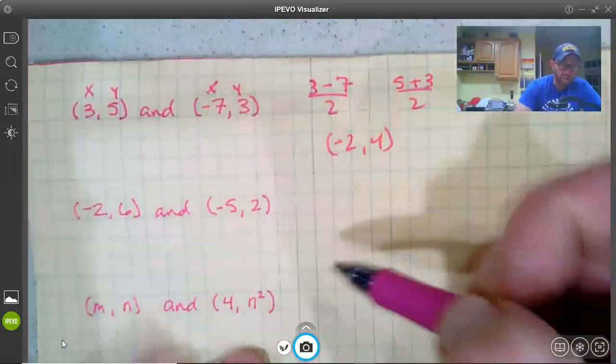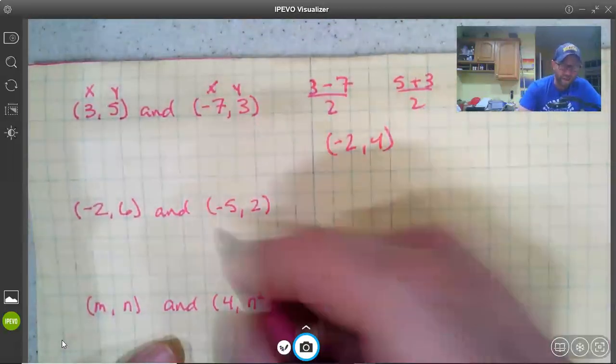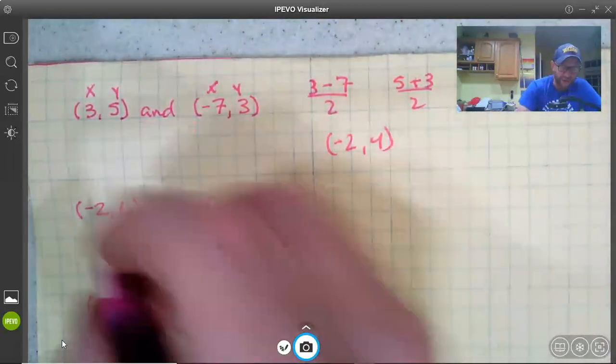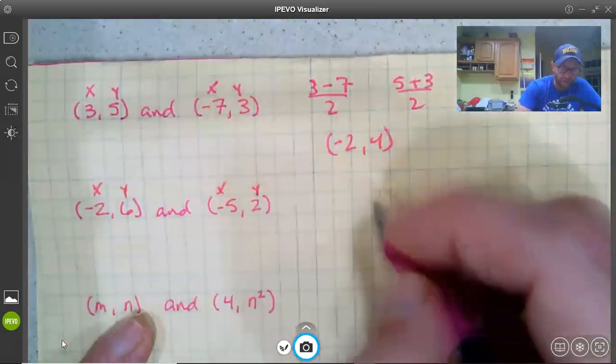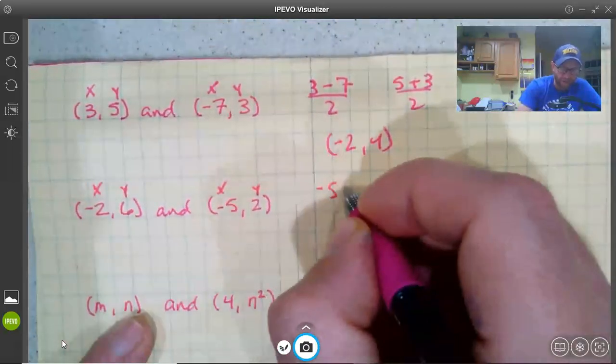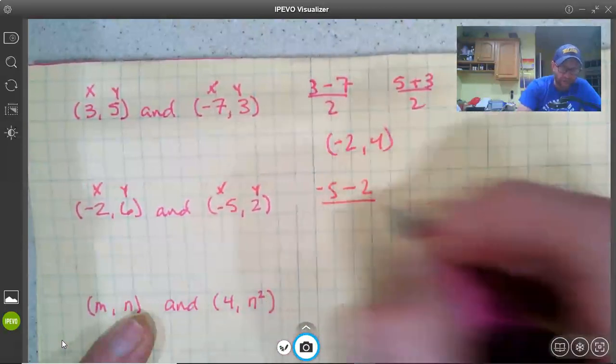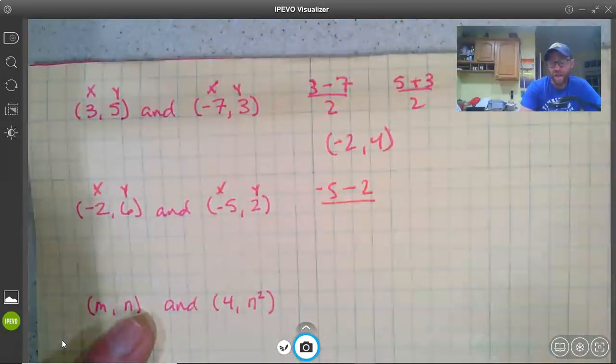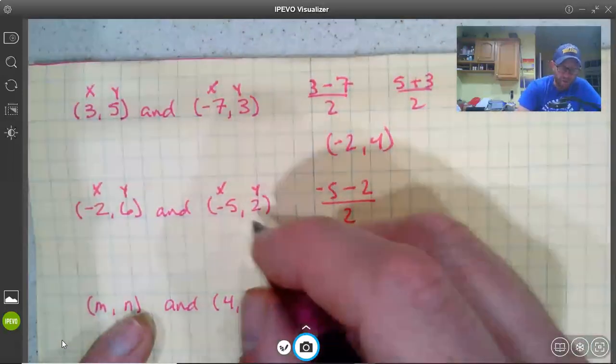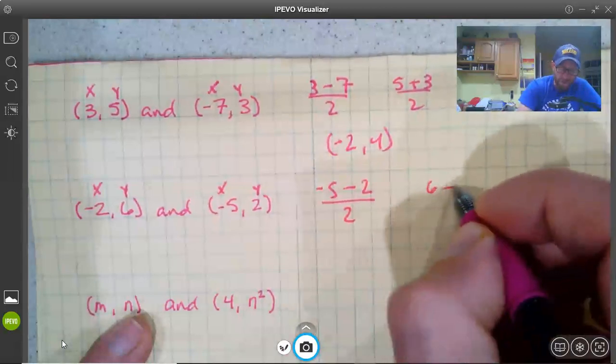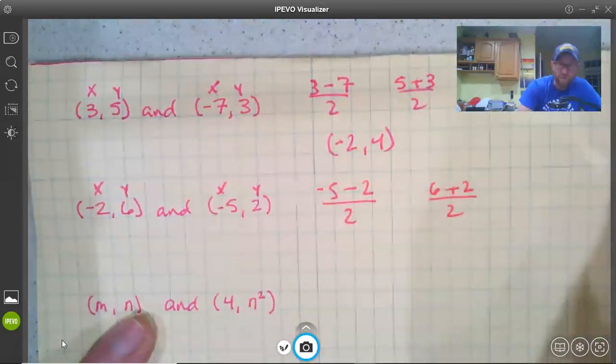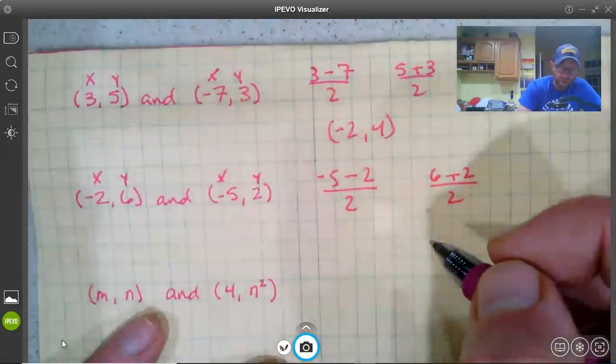Here's another one, negative 2 and negative 5. So I'm going to add together my x-coordinates and my y-coordinates. Negative 5 and negative 2, so I add them together. Negative 5 minus 2, which again, minus 2 is like plus a negative 2, so we divide by 2. And 6 and 2, so 6 plus 2 divided by 2.